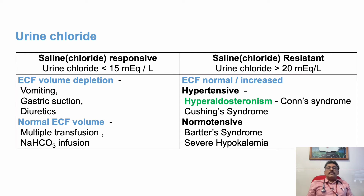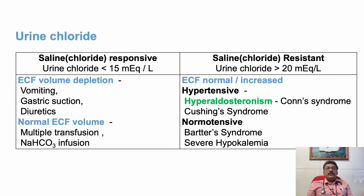Metabolic alkalosis is also classified into saline-responsive and saline-resistant types. In saline-responsive metabolic alkalosis, urine chloride is less than 15 mEq/L. Causes include vomiting, gastric suction, GI tract disturbances, diuretics, and multiple transfusions. In saline-resistant metabolic alkalosis, urine chloride is more than 20 mEq/L. Causes include hyperaldosteronism, Cushing syndrome, Bartter syndrome, and severe hypokalemia. One condition responds to normal saline infusion; the other does not.